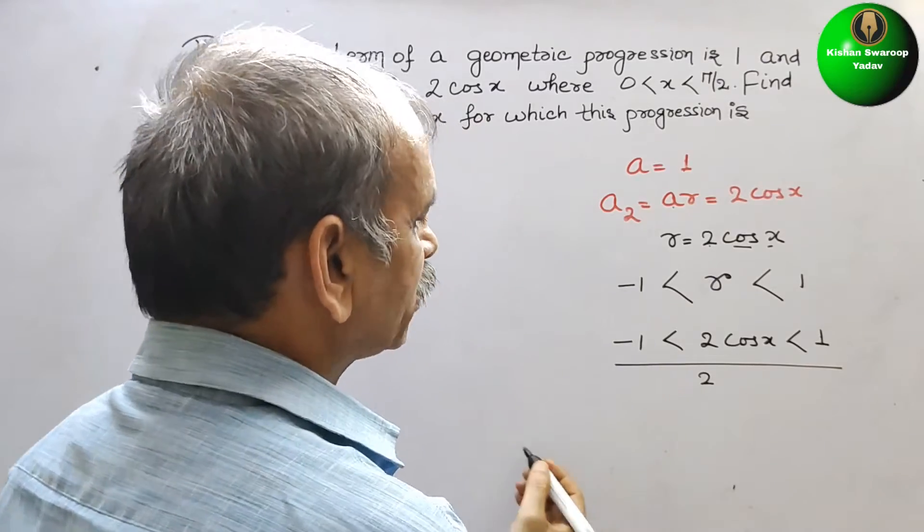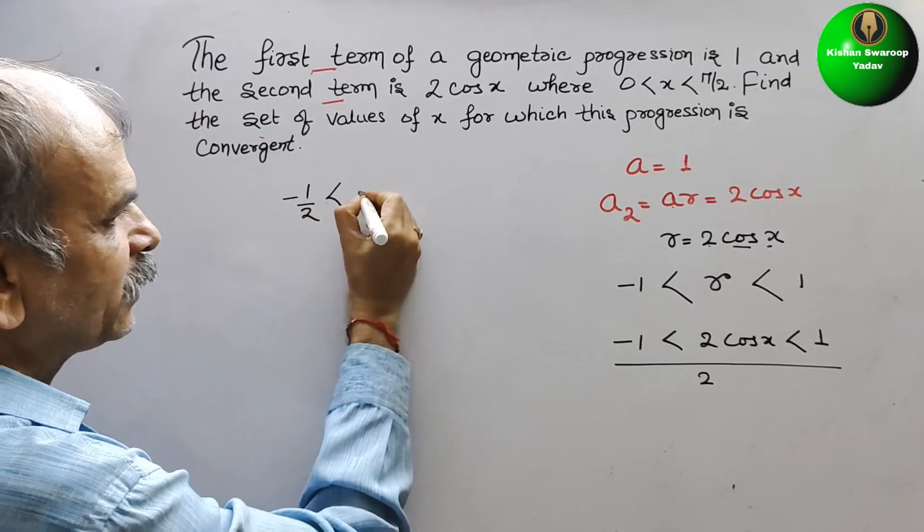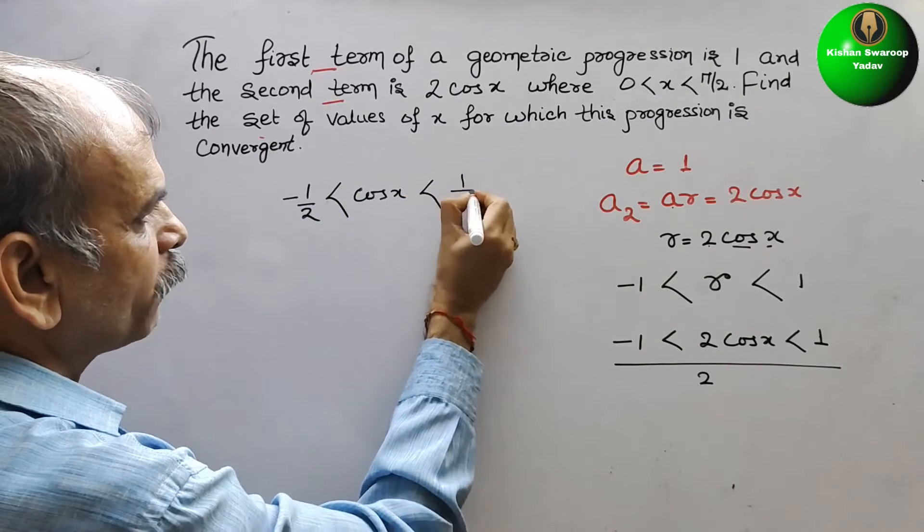So, here it will come as minus 1/2 less than cos x less than 1/2.